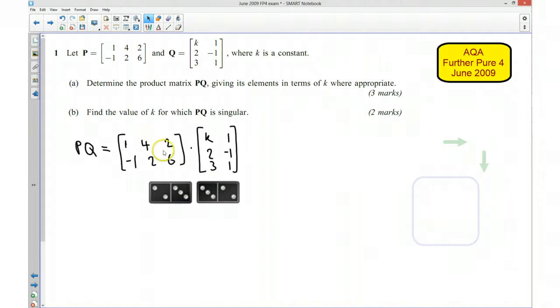Now in order to multiply these two matrices together, then these have to match each other, and they do. So that bit we know is going to work. The outside numbers tell us what the size of PQ is going to be. So PQ is going to be a 2 by 2 matrix.